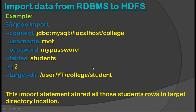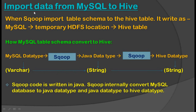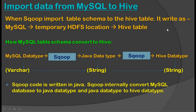So this way we can import data from MySQL to Hive. When Sqoop imports data to a Hive table, it first writes from MySQL to a temporary HDFS location, and after that from the temporary HDFS location to the Hive table.